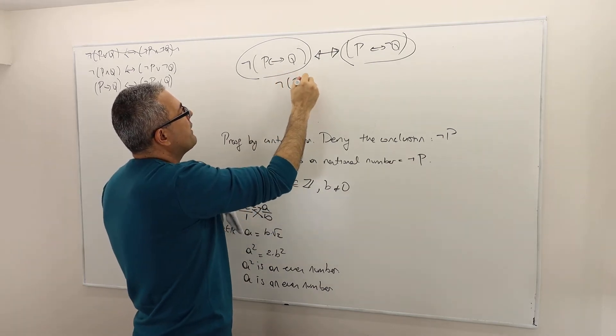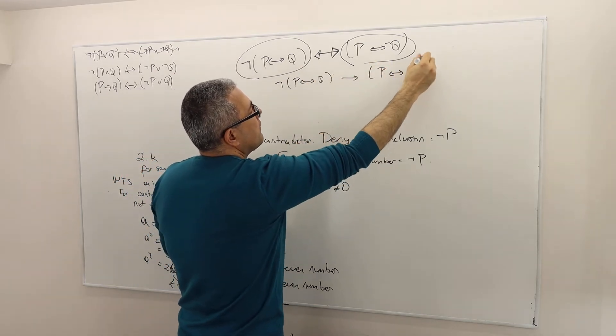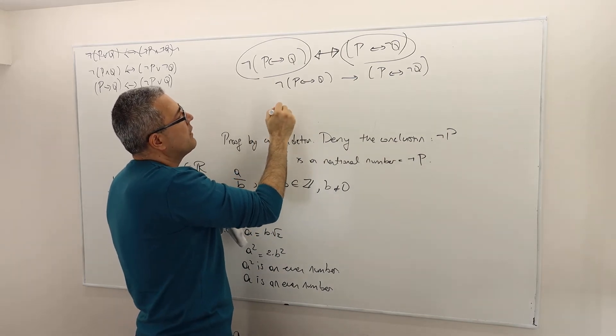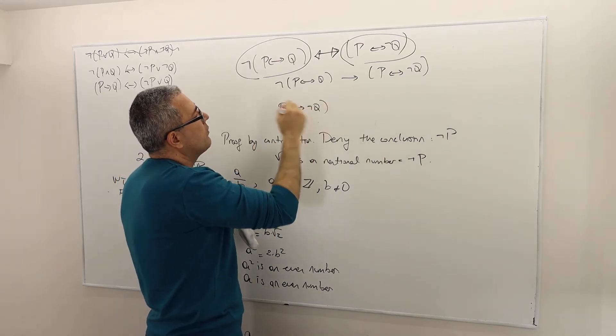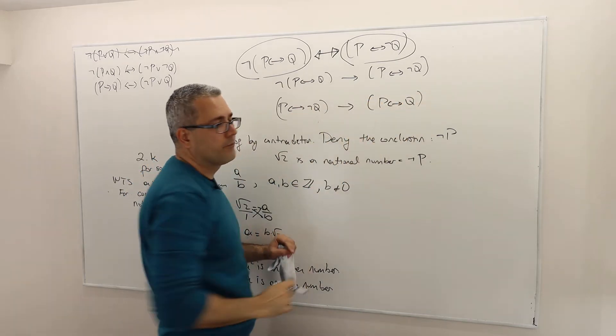One part showing that P if and only if Q implies P if and only if not Q, all right? And this is part one. And then the second part is P if and only if not Q implies P if and only if Q, all right?